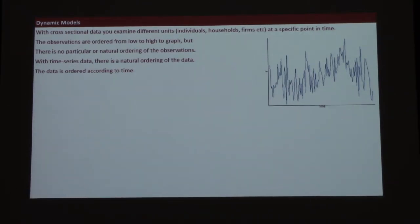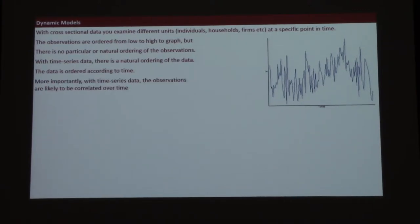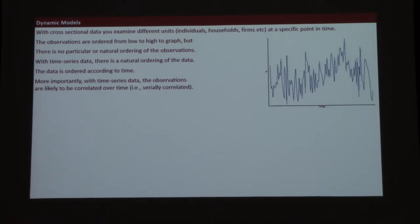Now we're going to do things a little more methodically and formally. Naturally ordering stuff over time is going to create some problems. One of them is that things tend to be correlated with each other — and this is called serial correlation or autocorrelation.